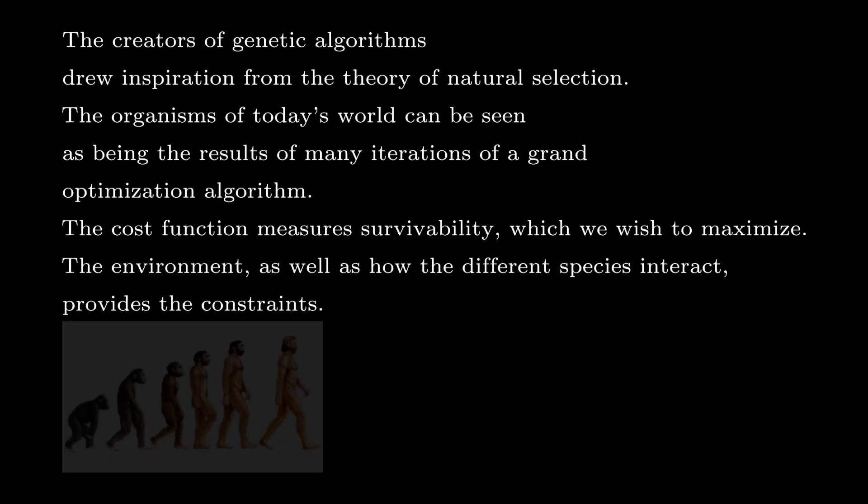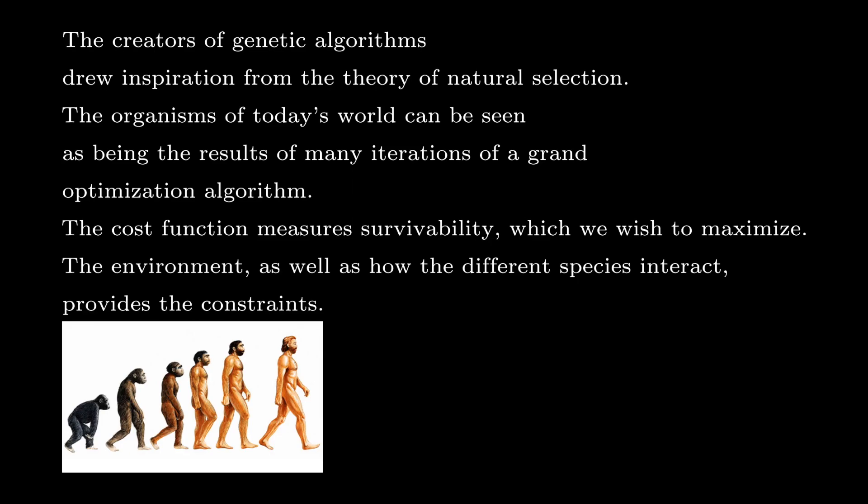Genetic algorithms derive their inspiration from nature. They are modeled along the lines of natural selection. This makes sense intuitively, as natural selection can be thought of as a grand optimization scheme. The higher the survivability of a species, the more likely it is to survive in that environment for longer. Every species alive today is a result of this optimization problem with ever-changing constraints.